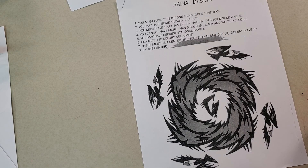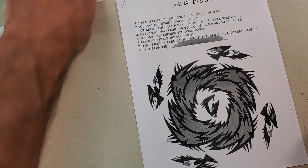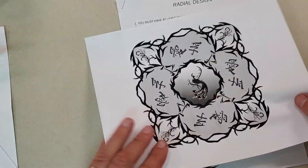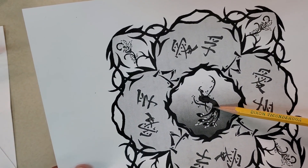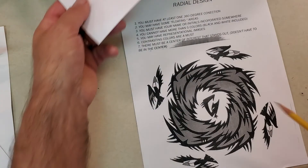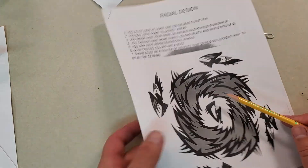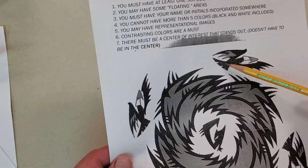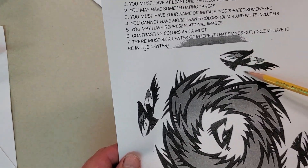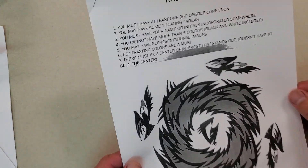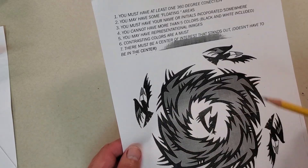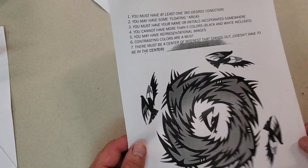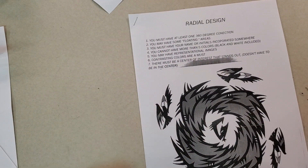You may have representational images. So in this case, this actually has a peacock here. In this other case, it's got this eagle character. So it's representational — it looks like something as opposed to just a design. But it doesn't have to have representational images.